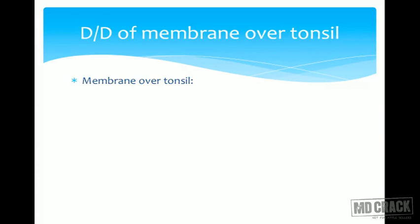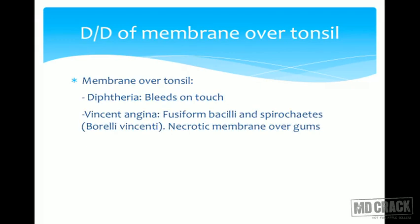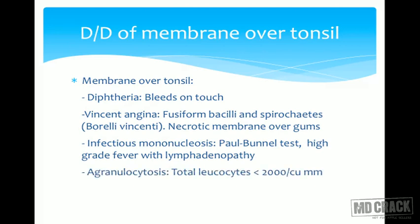The differential diagnosis of membrane over the tonsil includes diphtheria, in which the membrane bleeds when removed or on touch, Vincent's angina, caused by fusiform bacilli and spirochetes known as Borrelia vincenti — producing a necrotic membrane over gums and sometimes tonsils.